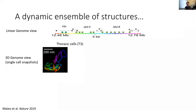With these instruments, we can see for the first time a snapshot view of the 3D arrangement of DNA sequence within an interphase nucleus that is actively undergoing transcription and gene regulation. In this example, we see a snapshot from a thoracic cell in a 10-hour-old Drosophila embryo. This colored region of the genome we've imaged contains regulatory sequences and genes that are essential for the proper developmental patterning of the embryo.